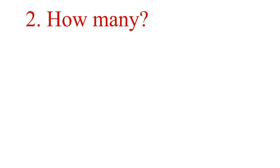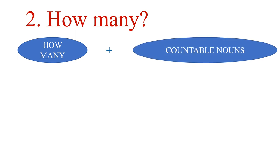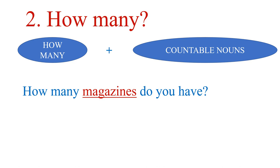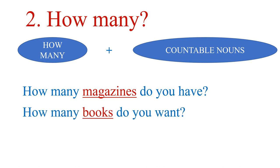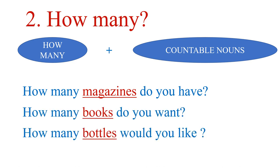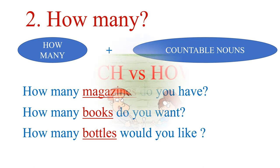Now let's move to 'how many.' How many is used with countable nouns. For example: How many magazines do you have? How many books do you want? How many bottles would you like? You see — magazines, books, bottles are in plural form and they are countable nouns, so they go with 'how many,' not 'how much.' Do you understand? It's easy, right?